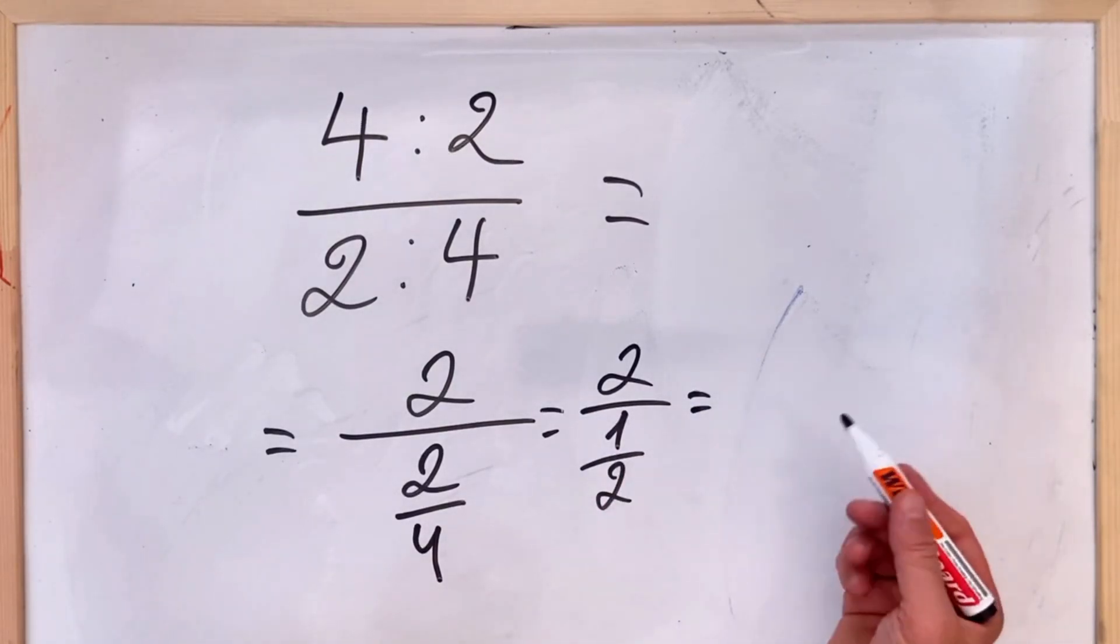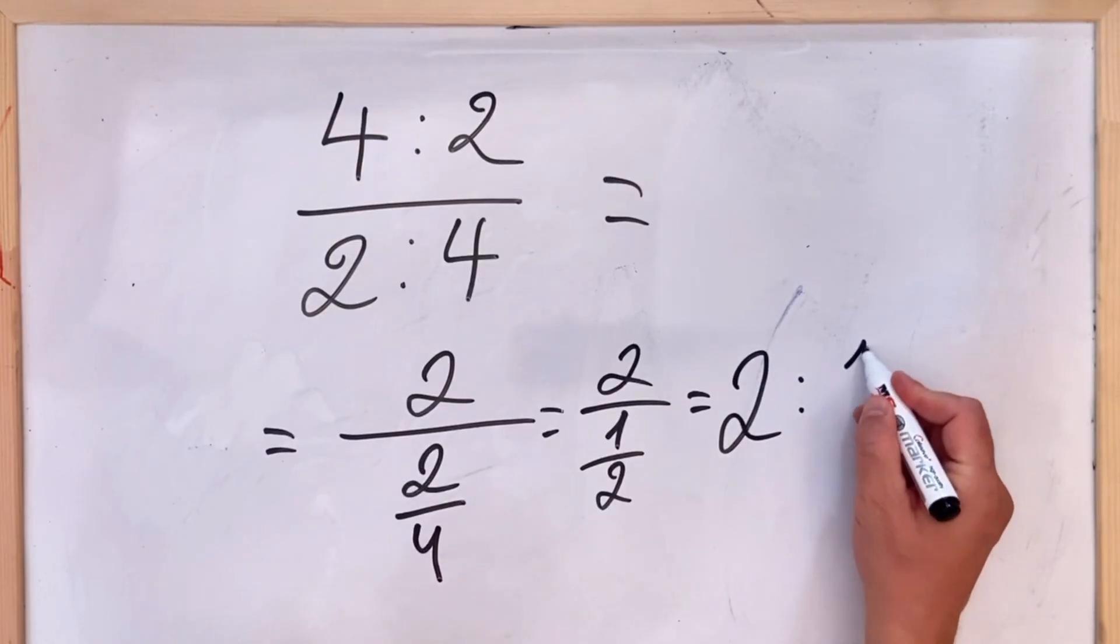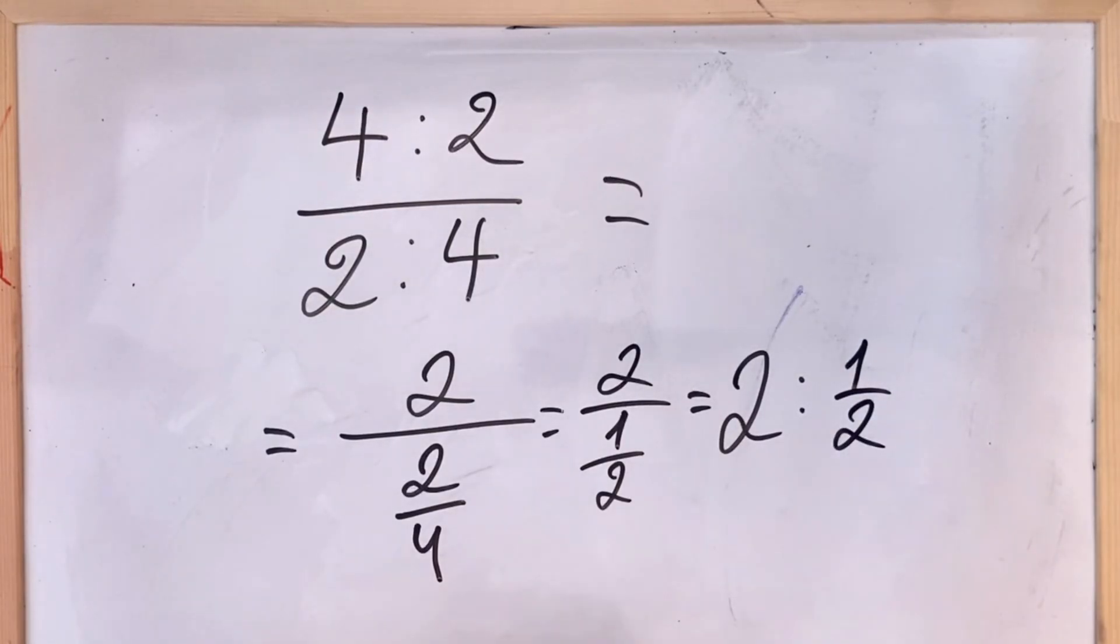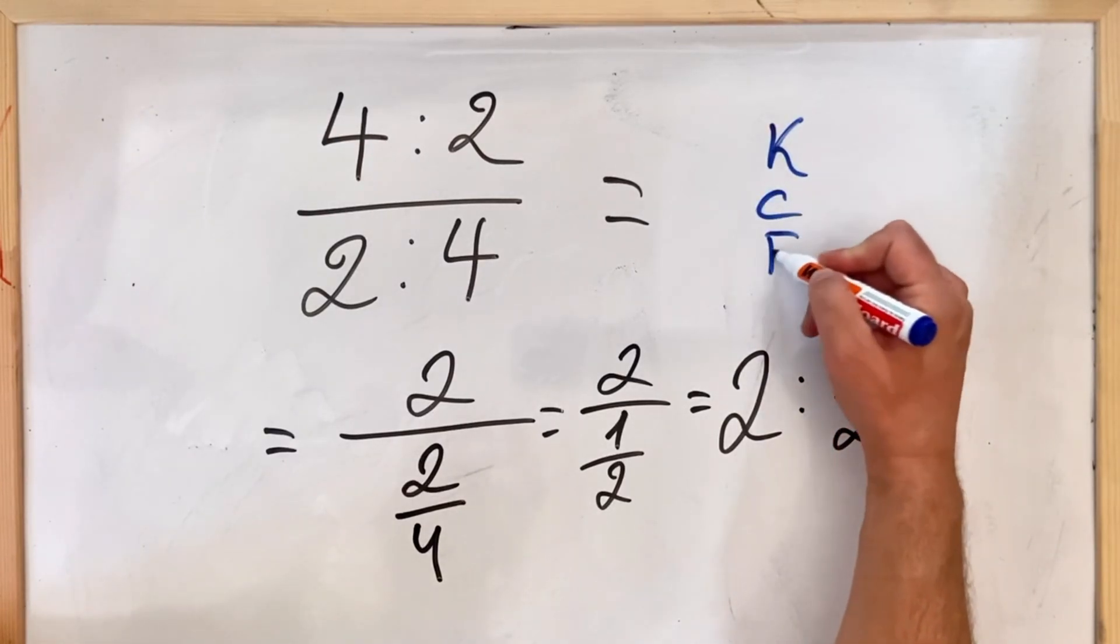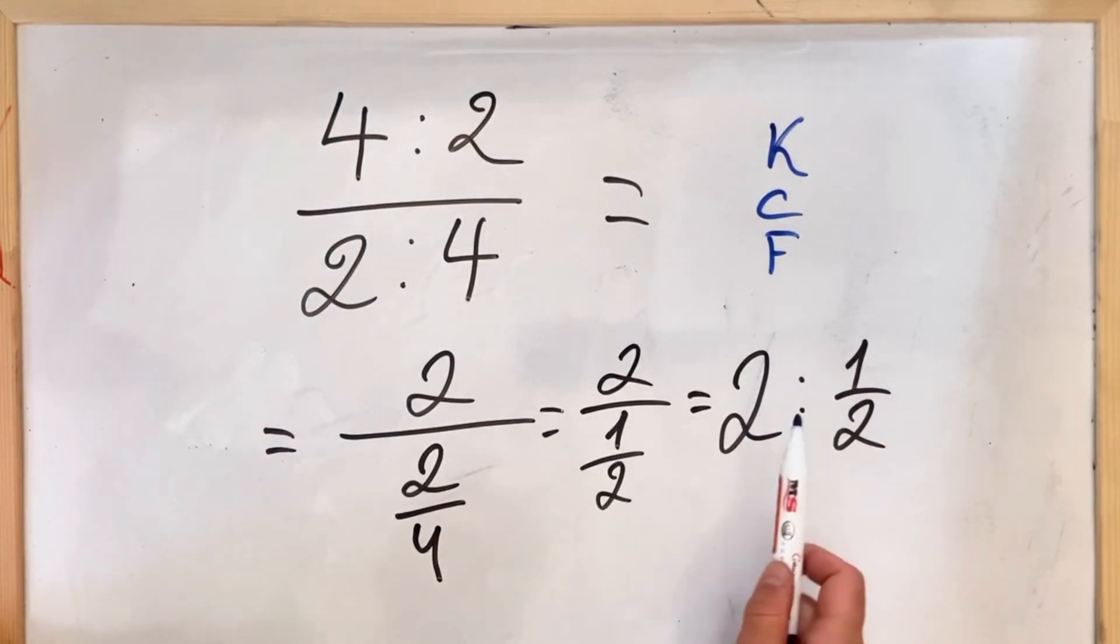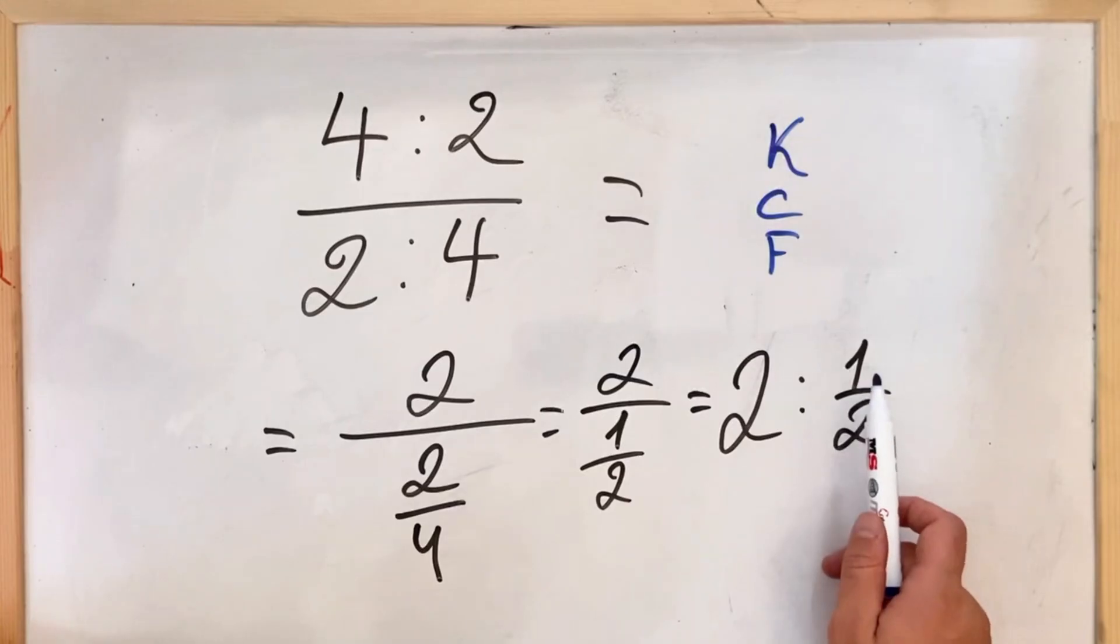So you have two divided by one and a half. In this case you can apply the KCF rule where K stands for keep the first, C stands for change the sign, and F stands for flip the second.